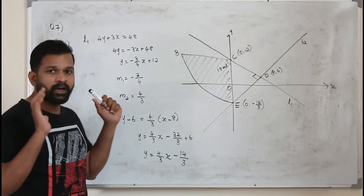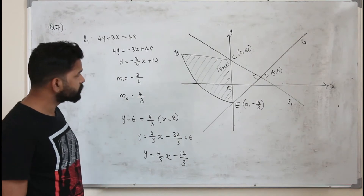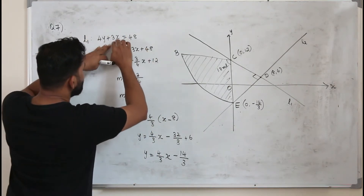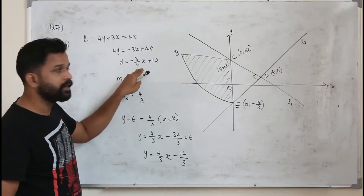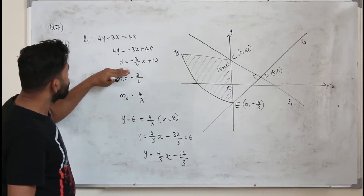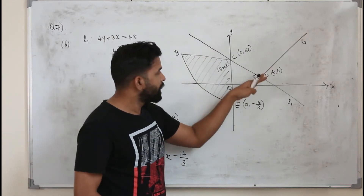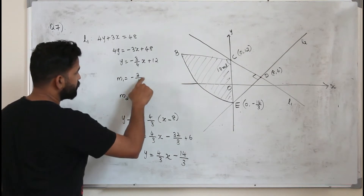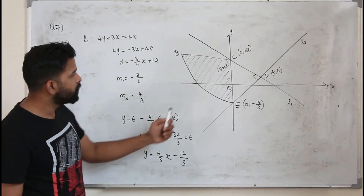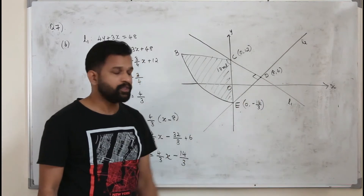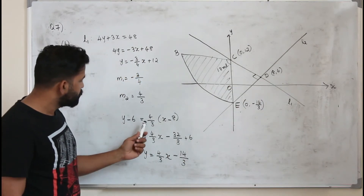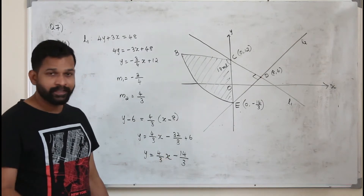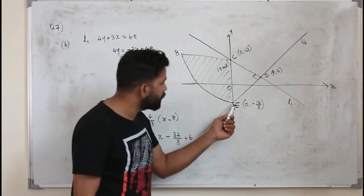To solve part B, you first need to retrieve the slope from the given equation by making y the subject. Then, since the two lines are perpendicular, take the negative reciprocal of the slope. Use the given point through which L2 passes, substitute it, and find the equation in the form y equals mx plus c. The constant c will be the y-intercept — the y-coordinate of point E.